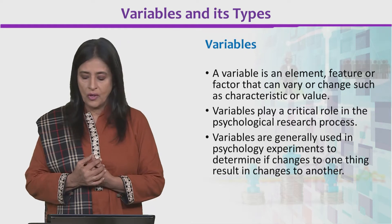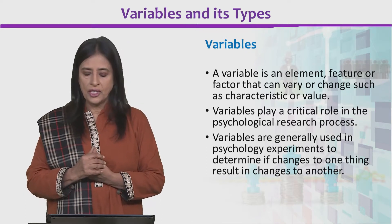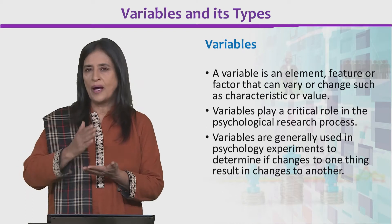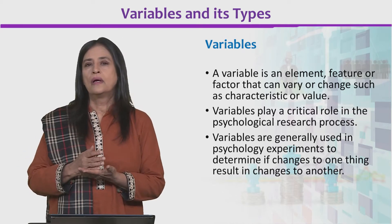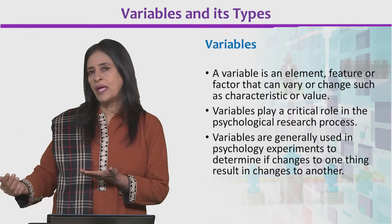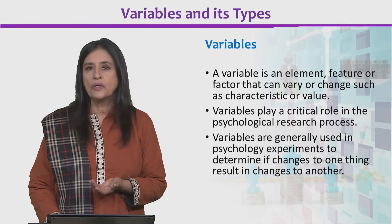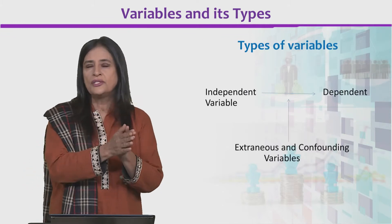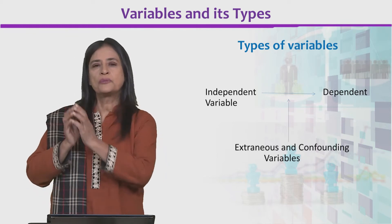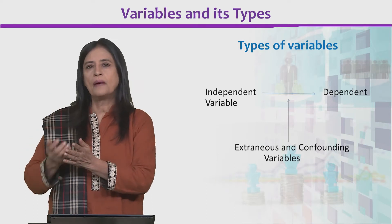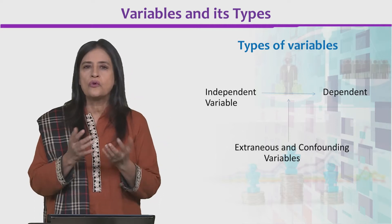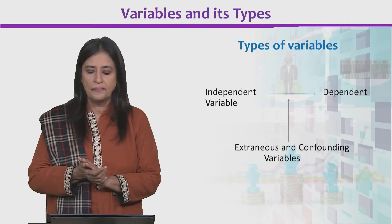Variables play a critical role in the psychological research process and they are generally used in psychology experiments to determine if changes to one thing result in changes to another. For example, increase in dosage leads to decrease in pain. That is a good example of how change in one variable leads to a change in another. We call them both variables because pain can also change, and dosage of medicine can also change. Something which cannot change or you cannot control is not a variable for an experiment.